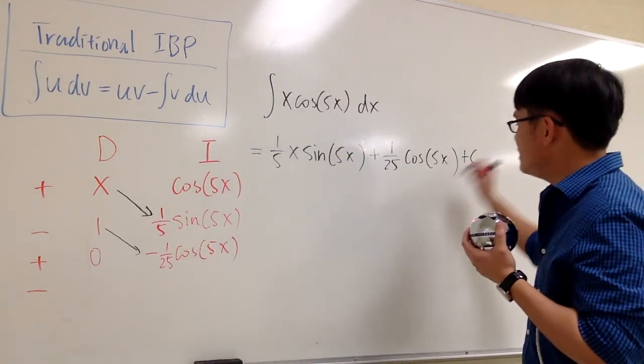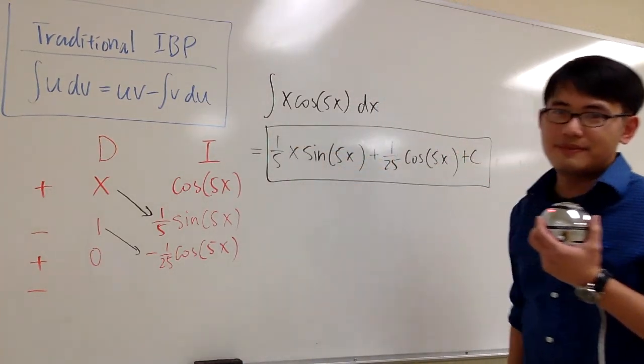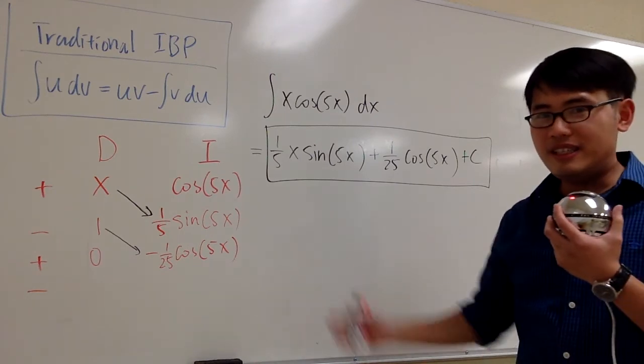And the idea is that if you do 0 times the next diagonal, it's 0. We are done. This is it. At the end, you just put plus c. And you can box this for the answer. This is it. Integration by parts with the DI method.